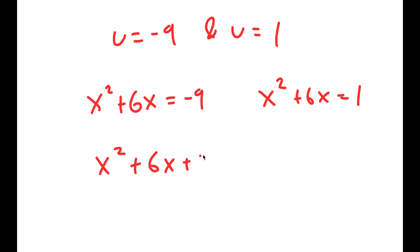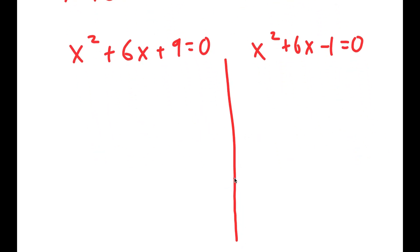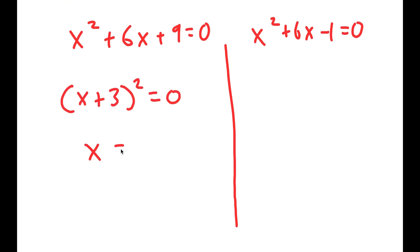x² + 6x + 9 = 0, and x² + 6x - 1 = 0. For the first equation, x² + 6x + 9 = 0, I get (x+3)² = 0. So x equals -3. This is one solution.